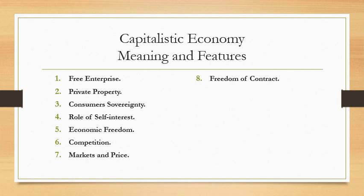Main Features of Capitalist Economy. Feature 1: Free Enterprise. All economic activities are conducted by private individuals, bodies and institutions. The private sector is the sole sector under pure capitalism.